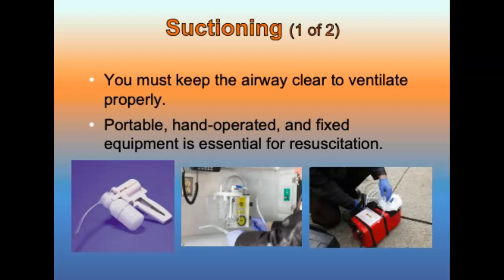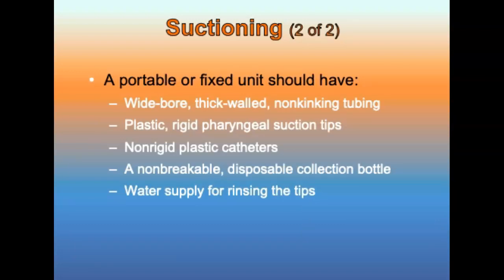Suctioning equipment can be portable or hand-operated, and fixed or mounted. A portable suction unit must provide enough vacuum pressure and flow to allow effective suctioning of the mouth and nose. Hand-operated suction units with disposable chambers are reliable, effective, and relatively inexpensive. A fixed suctioning unit should generate airflow of more than 40 liters per minute and a vacuum of more than 300 mmHg when the tubing is clamped. Units should be fitted with wide-bore thick-walled non-kinking tubing, plastic rigid pharyngeal suction tips (called tonsil tips or Yankauer tips), non-rigid plastic catheters (French or whistle tips), non-breakable disposable collection bottles, and a water supply for rinsing.